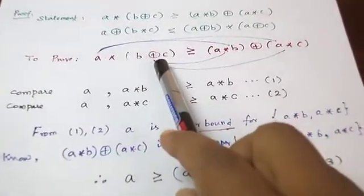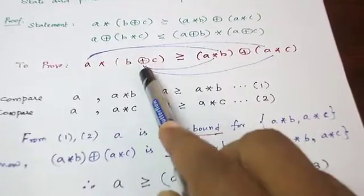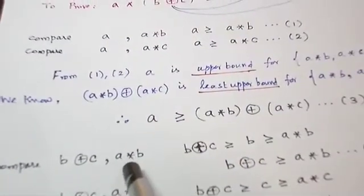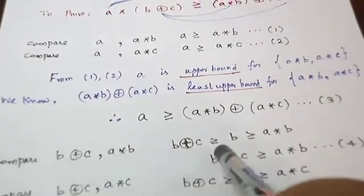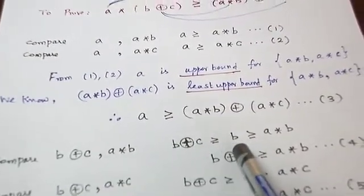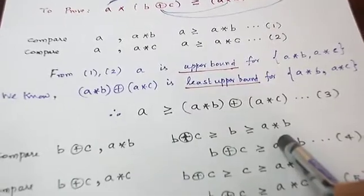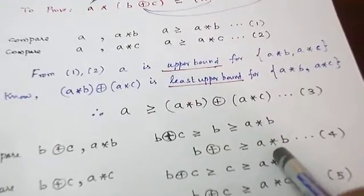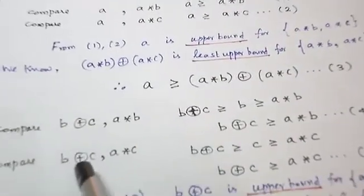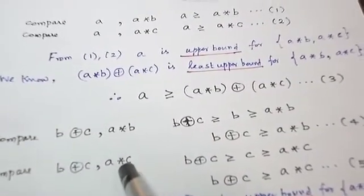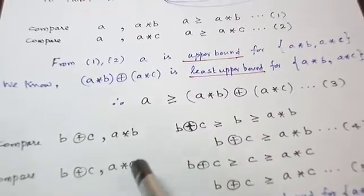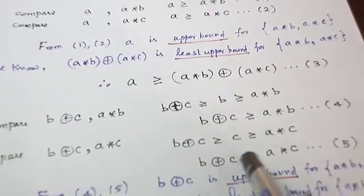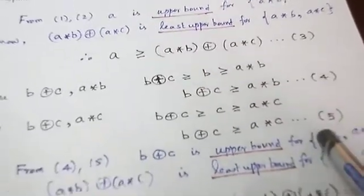Now compare B+C with A★B and B+C with A★C. For B+C and A★B, combine through the common element B: B+C is greater than B, and B is greater than A★B, so by transitivity B+C is greater than A★B — this is the fourth inequality. Similarly, compare B+C and A★C through the common element C: B+C is greater than C, and C is greater than A★C, so B+C is greater than A★C — this is the fifth inequality.